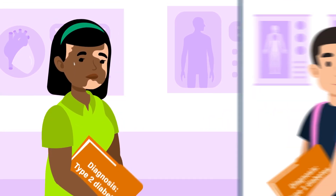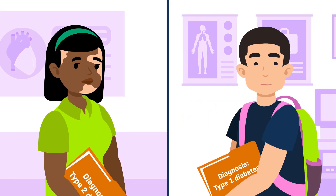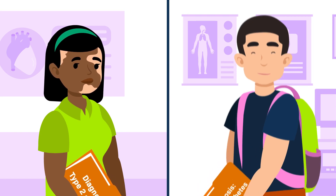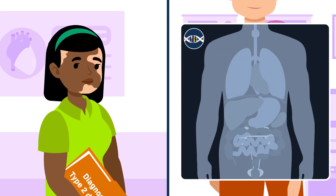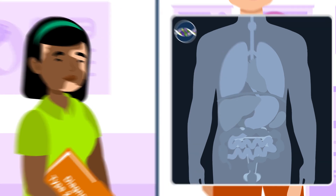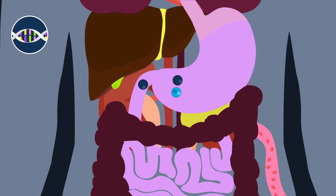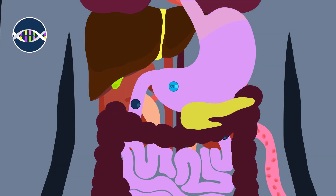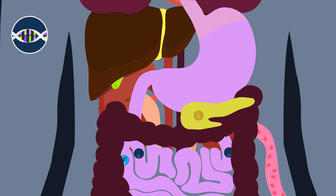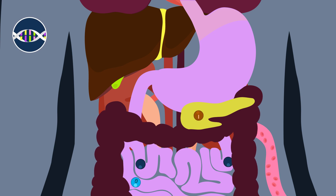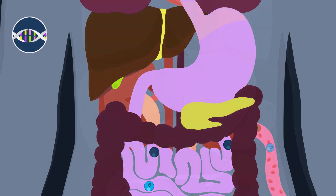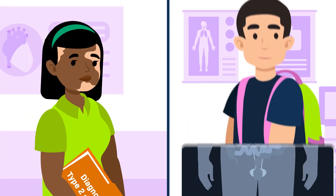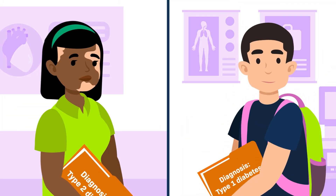This leads to symptoms such as increased hunger and thirst, tiredness, and heart conditions. Diabetes can take two forms: type 1 and type 2. Type 1 diabetes is a genetic condition that emerges early in life. It occurs because the pancreas produces little to no insulin, so the body cannot store and use glucose from the bloodstream.